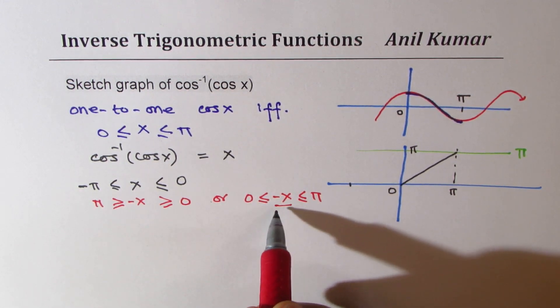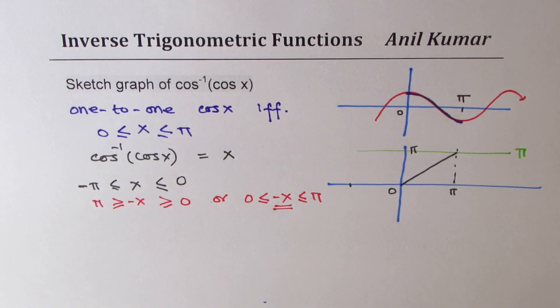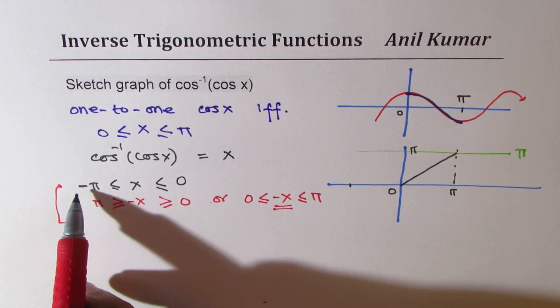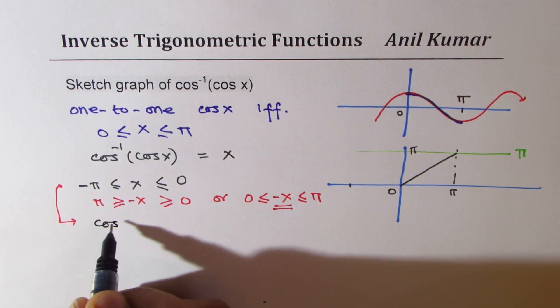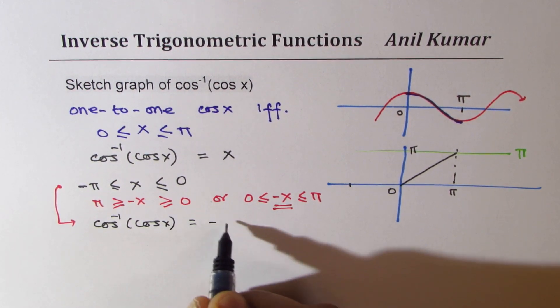What has happened here is that the value has become minus x. So, for the second interval, which is from minus pi to 0, I could write cos inverse of cos x equals to minus x.